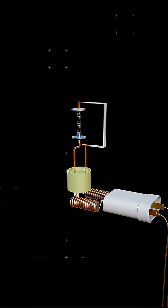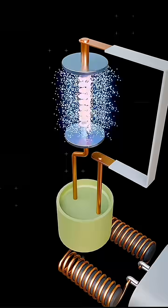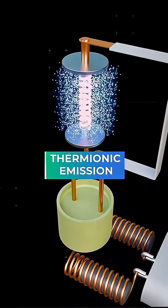A high current heats up a tungsten filament, acting as the negative electrode, and this heat releases electrons. We call this thermionic emission.